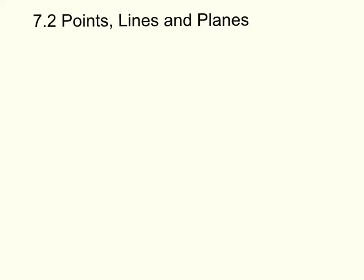Look at your key concepts. First thing is a point. A point has no size; it just indicates a location. You have to use a dot and a capital letter, with one letter. A line is a straight path that extends in opposite directions without ends. It contains infinitely many points, but it does not contain an endpoint.